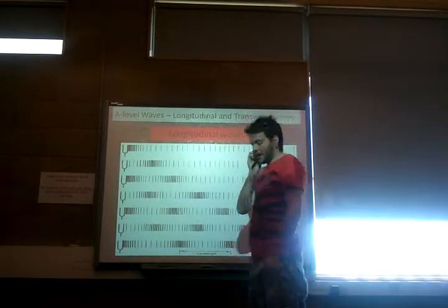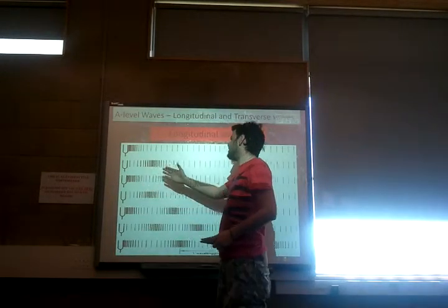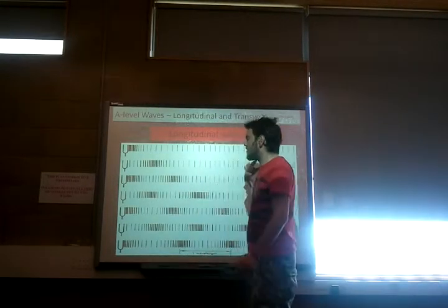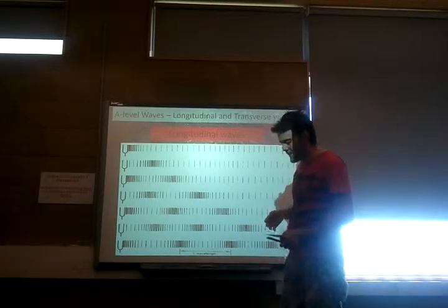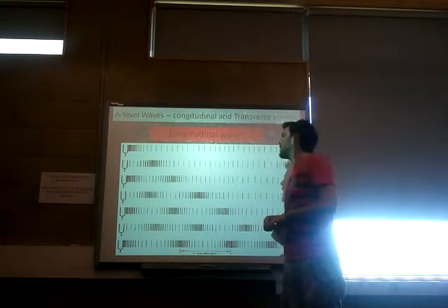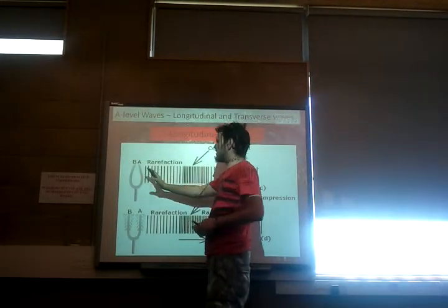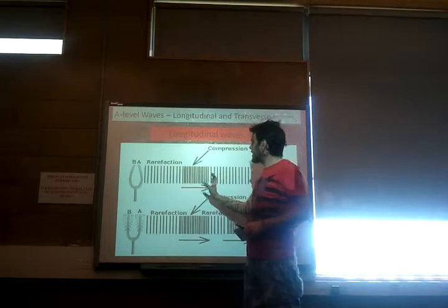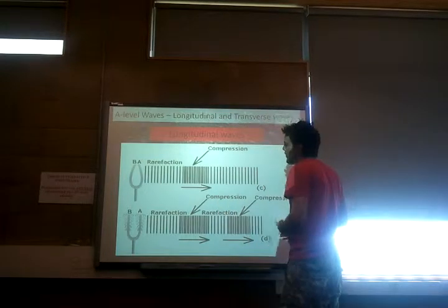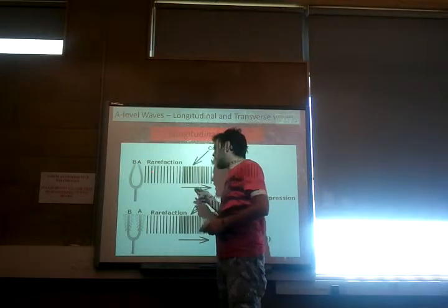Longitudinal waves - what we mean by longitudinal waves is it's a type of wave where the vibration is in the same direction as the ultimate wave movement. A wave is just carrying a vibration without the movement of any matter. Another way to describe a longitudinal wave would be as a pressure wave, because as the vibration occurs it causes compressions - basically bursts of that vibration moving between particles. This means we end up with a compression and something called a rarefaction.